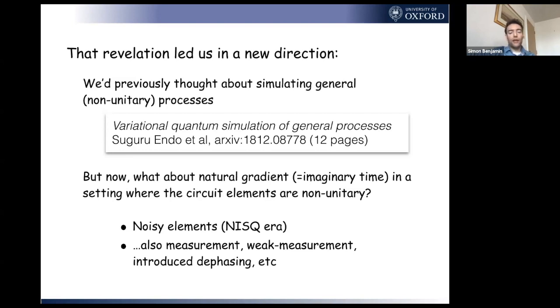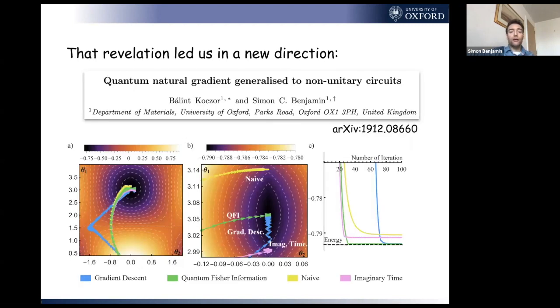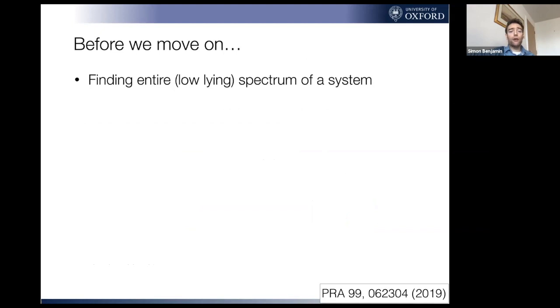This revelation led us in a new direction. We'd previously thought about simulating general quantum processes, including non-unitary ones. What we haven't thoroughly engaged with is how do we do this natural gradient approach where the circuit elements themselves are non-unitary. The obvious reason would be because they're noisy, very motivated by what we're all thinking about for the NISC era. My postdoc Ballant was able to generalize it now to full non-unitary matrices. It replaces the Fisher information with the quantum Fisher information.